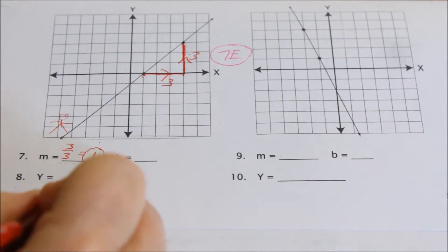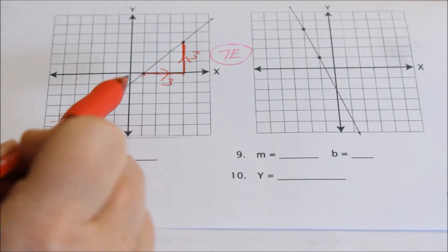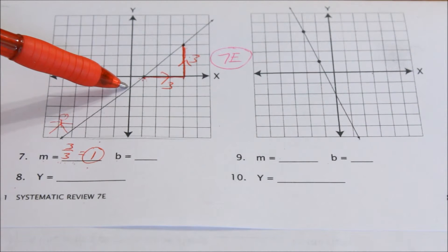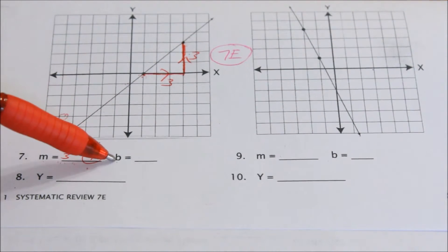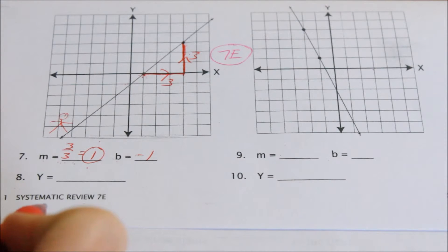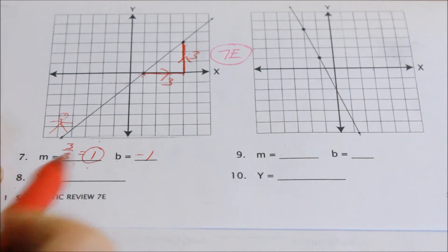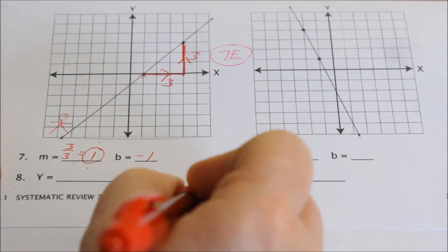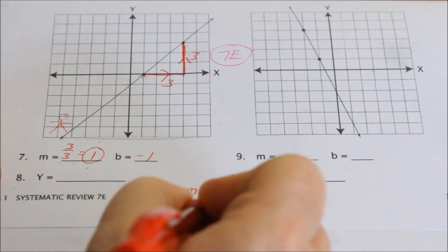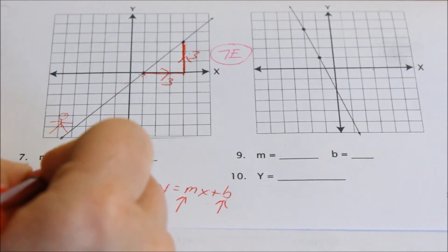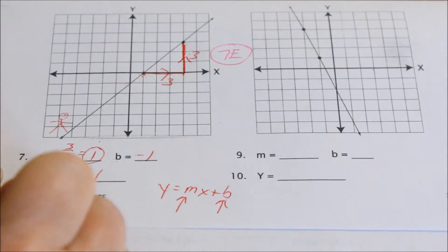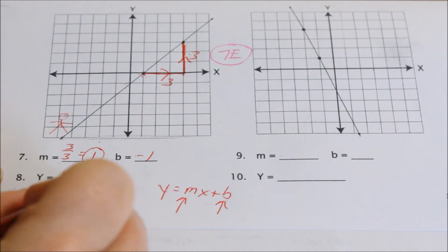Now they're asking for b, which is your y-intercept — where does the line cross the y-axis? This line crosses the y-axis right there. Here's the origin; we are at negative one. So it crosses the y-axis at negative one. That point is (0, negative 1), but we just write b equals negative one. Now they want the equation in slope-intercept form. y equals mx plus b. We know m equals 1 and b equals negative 1, so y equals x minus 1. That is the equation for this line.